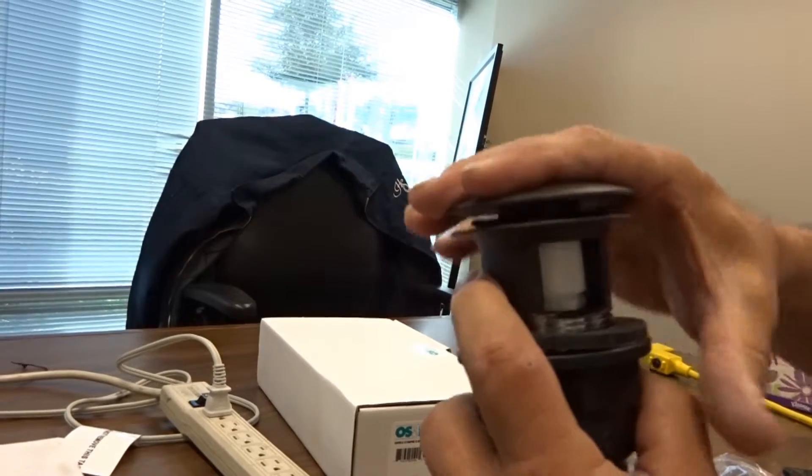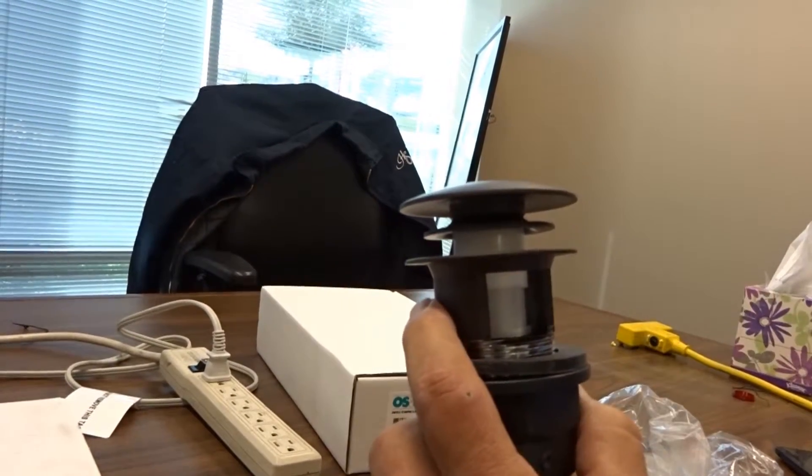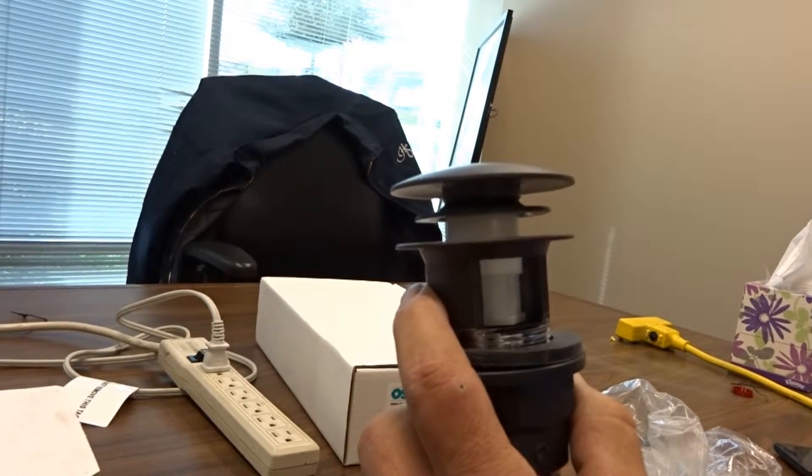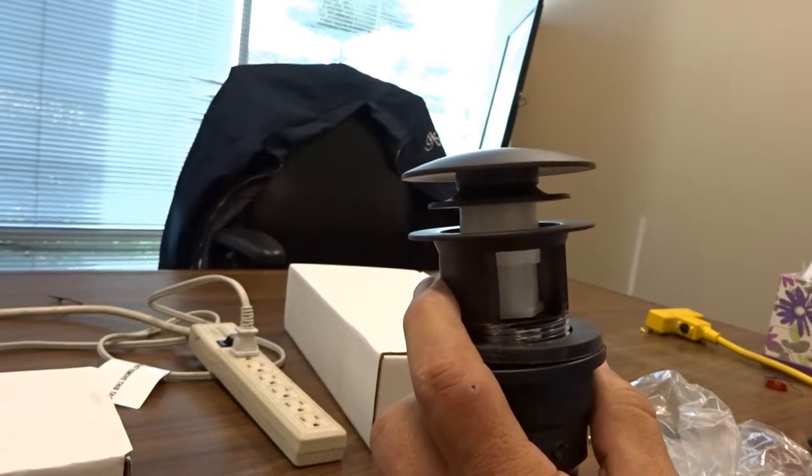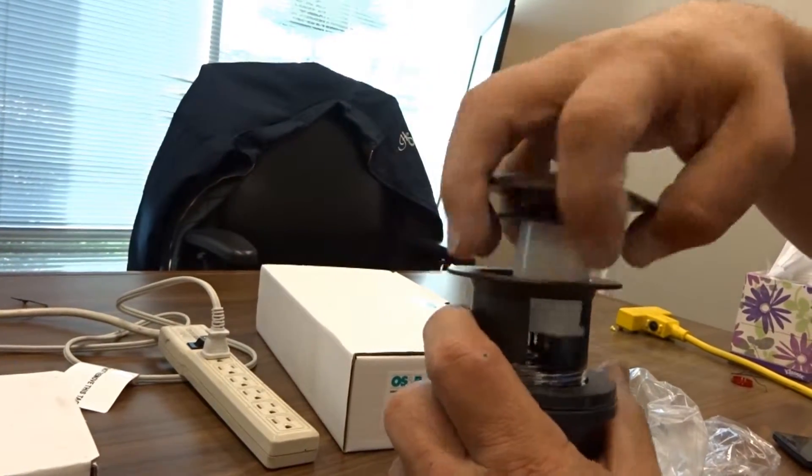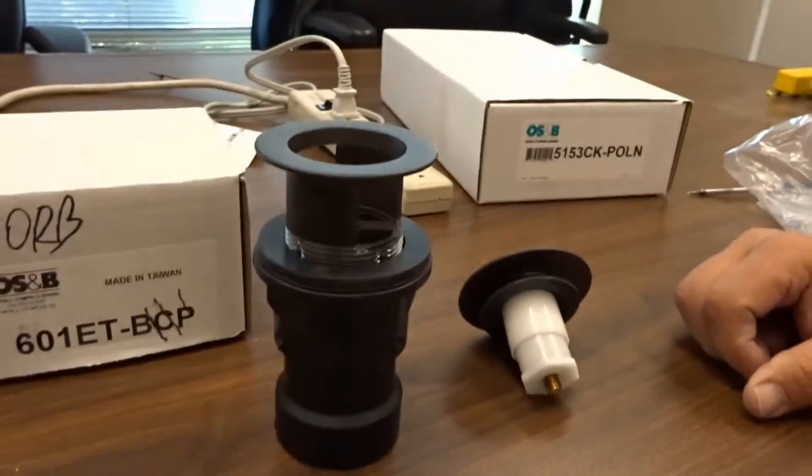Usually the white part gets damaged, or it snaps out of place, and it's not repairable. You will need to replace it. With your serial number information, we can look it up and get you the correct replacement. That is your pop-up drain kit.